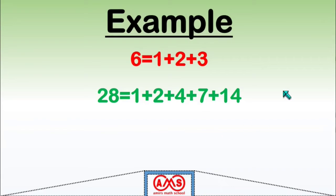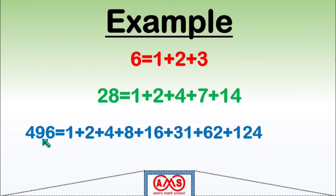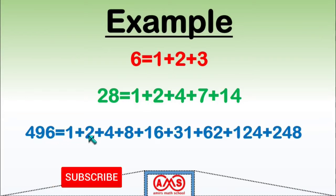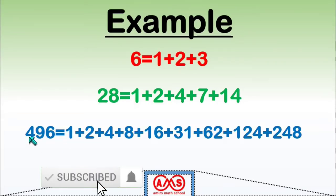The next perfect number is 496. The proper divisors of 496 are 1, 2, 4, 8, 16, 31, 62, 124, and 248. If we take the sum of all these proper divisors, that will be 496. So according to the definition, 496 is a perfect number.